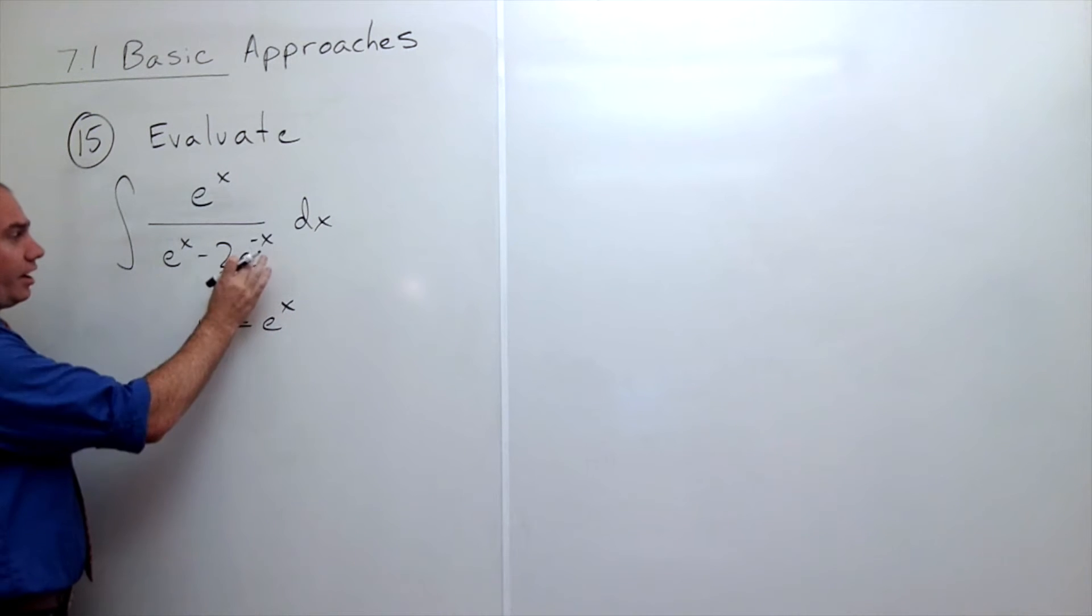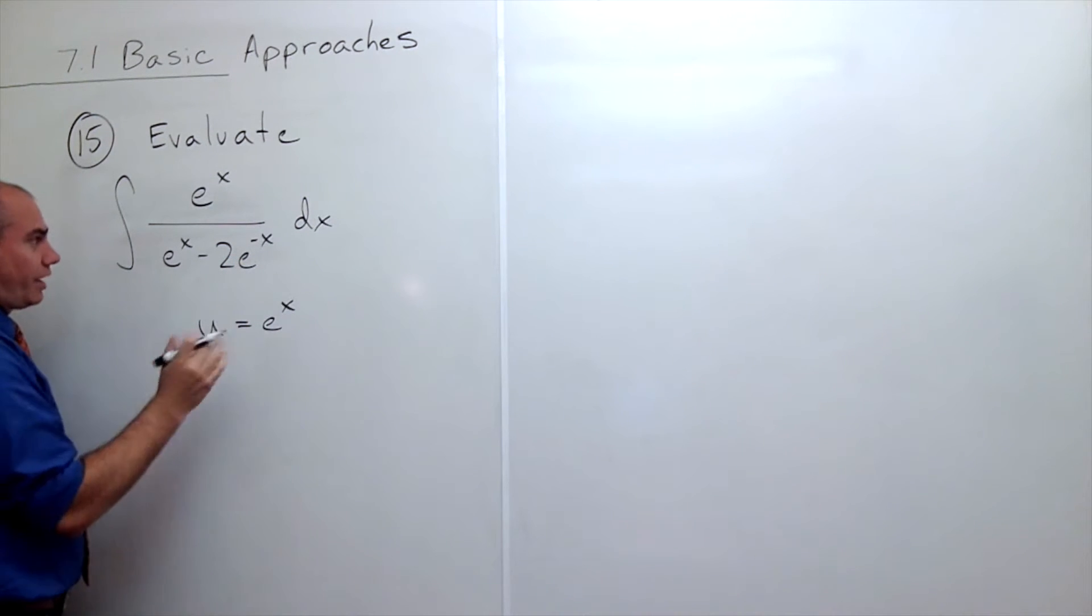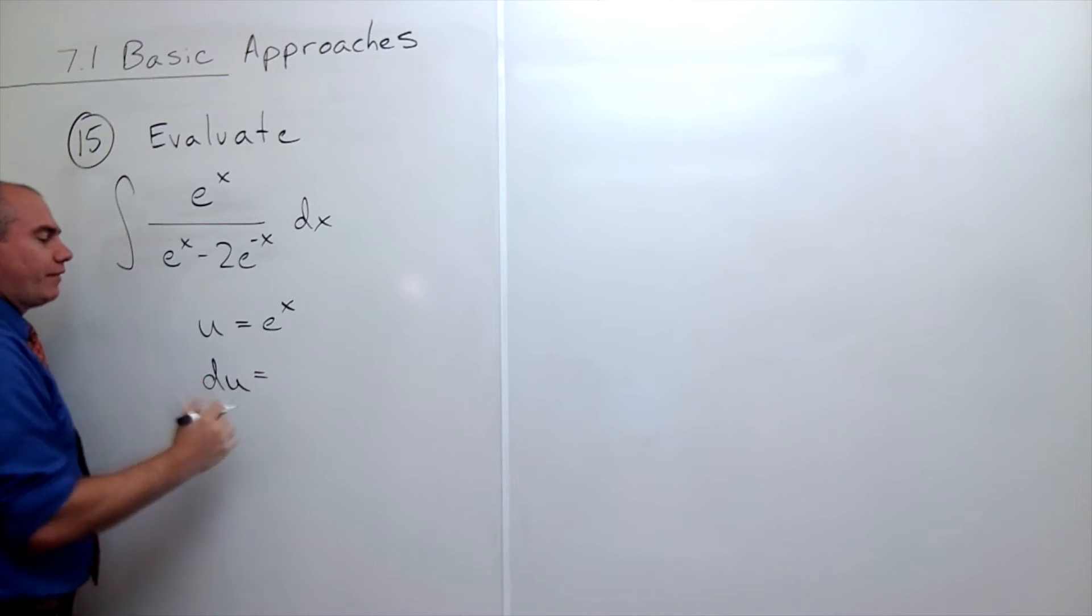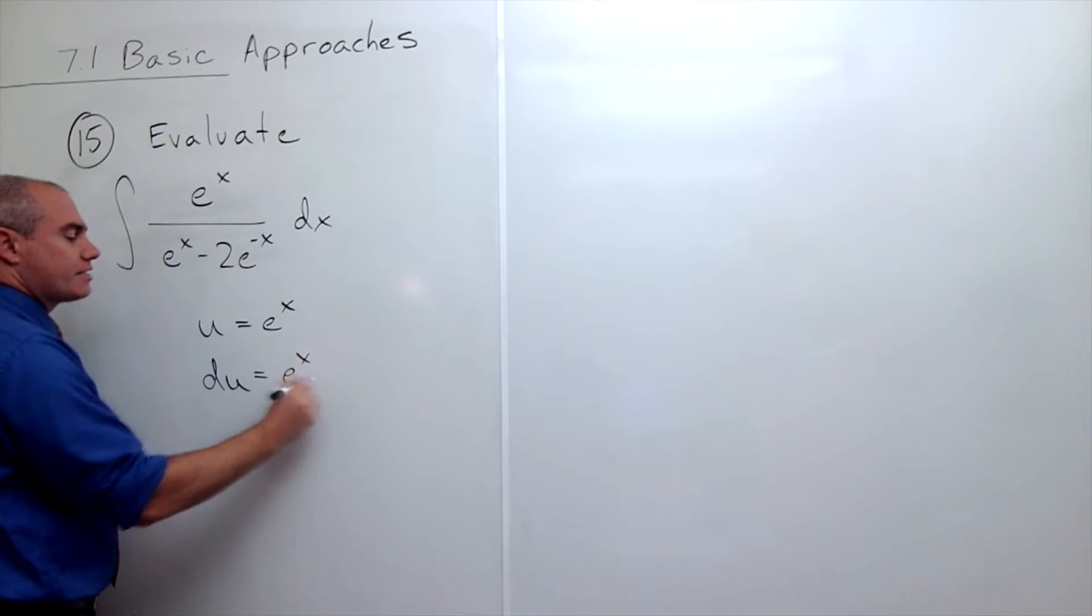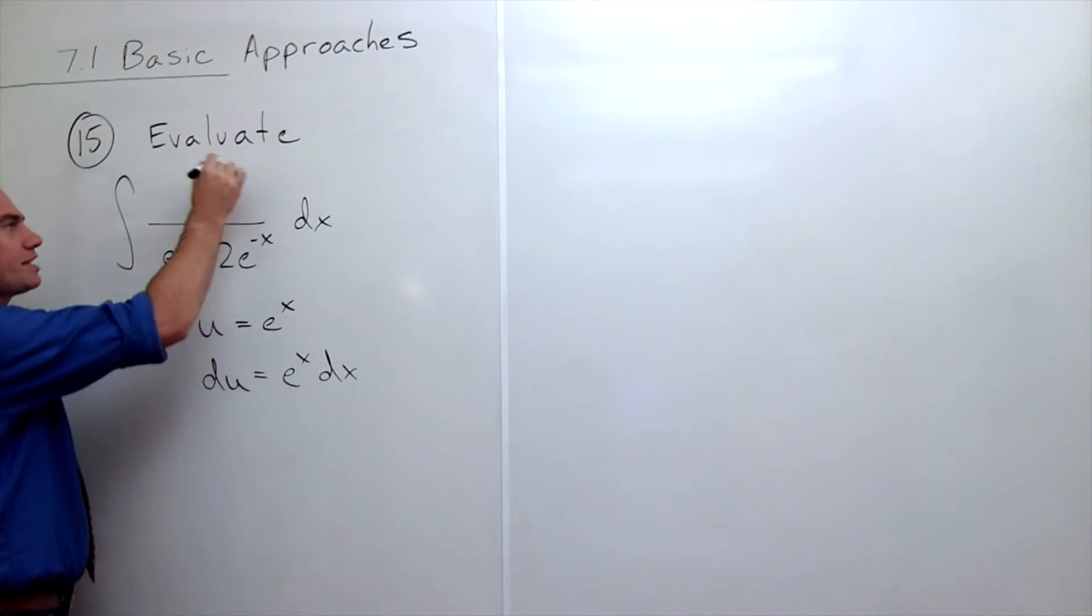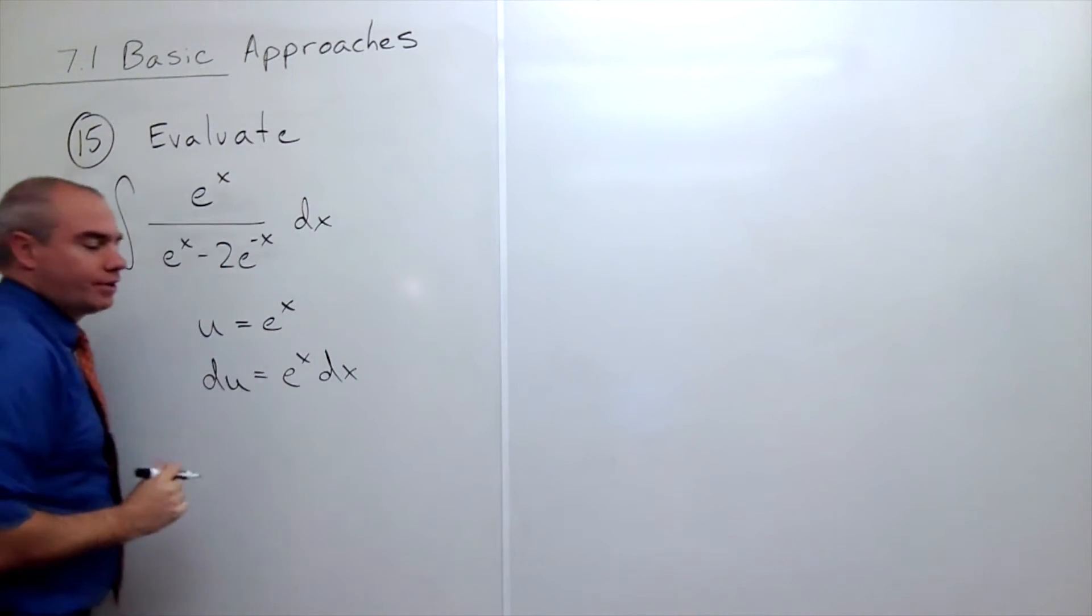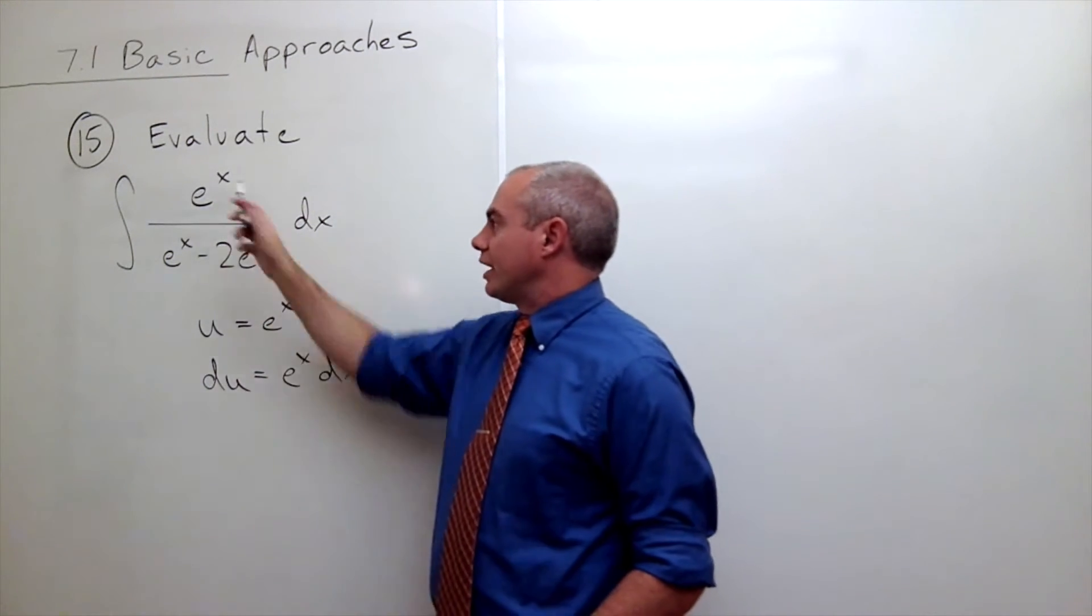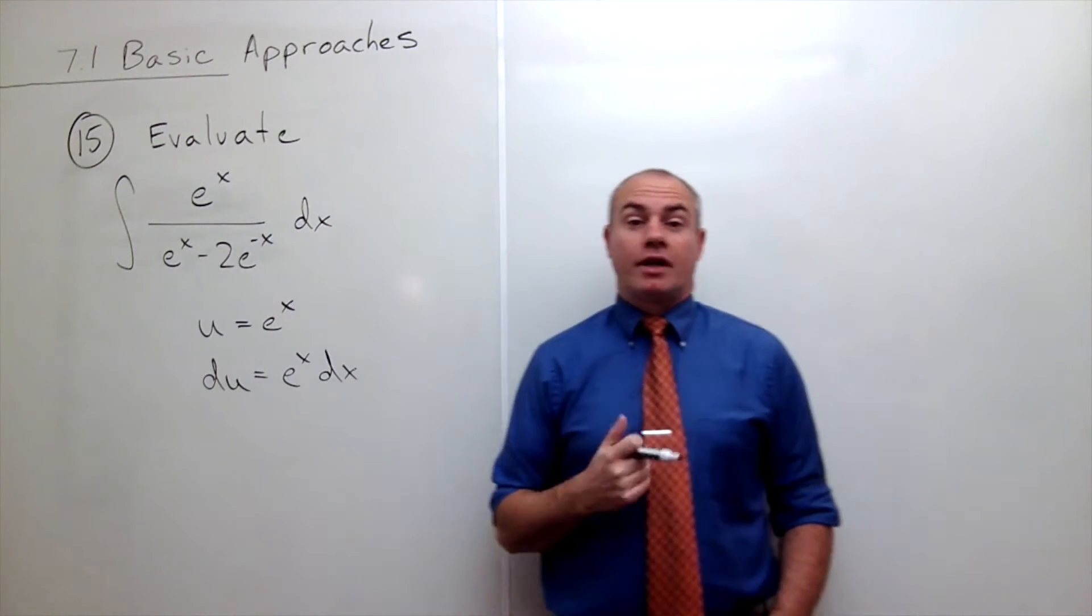When I take the derivative of u I get e to the x dx, which is exactly what I have on the top of that integral. So I'm able to just put du in as the top of the integral, and that seems like a good thing.